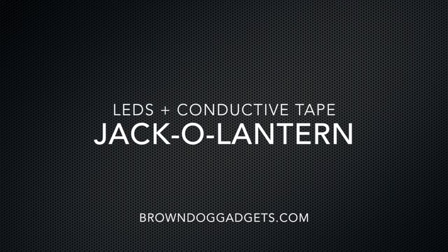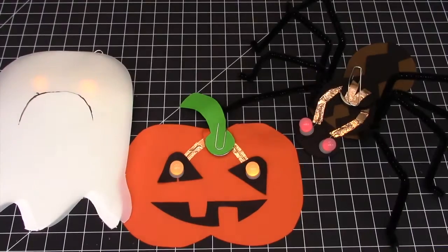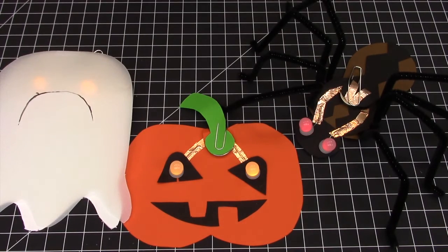This is Robin of Brown Dog Gadgets, and today we're going to make a Jack-O-Lantern with glowing LED eyes and conductive copper tape.